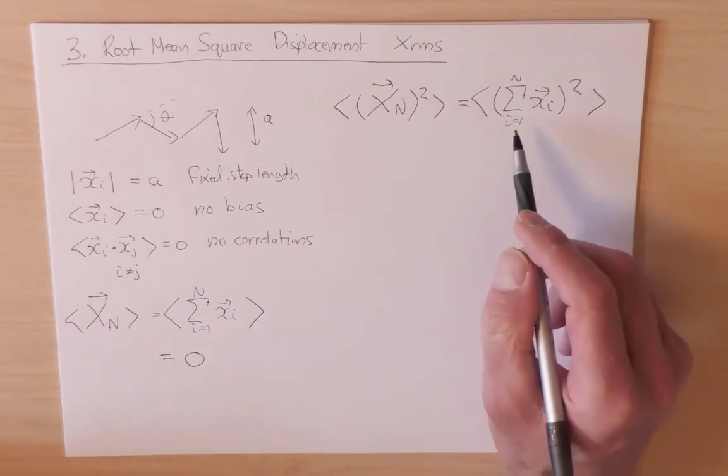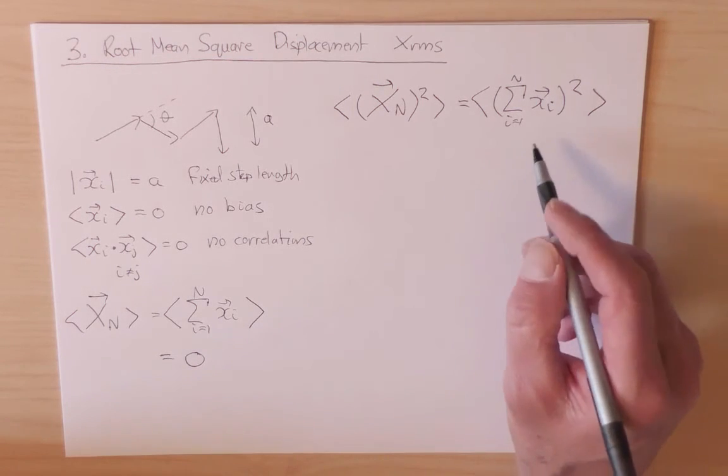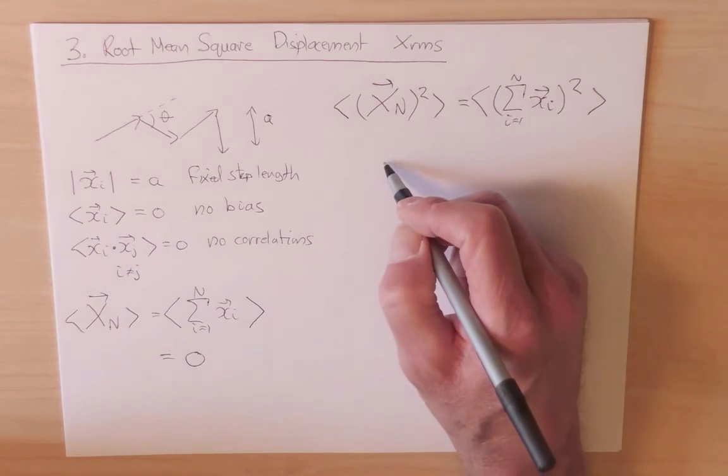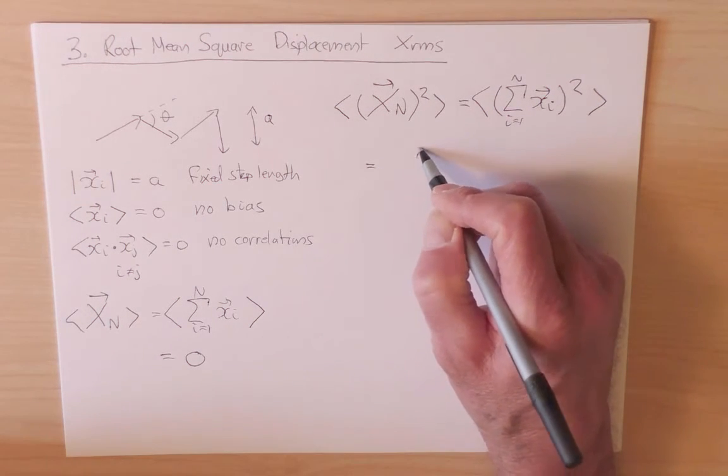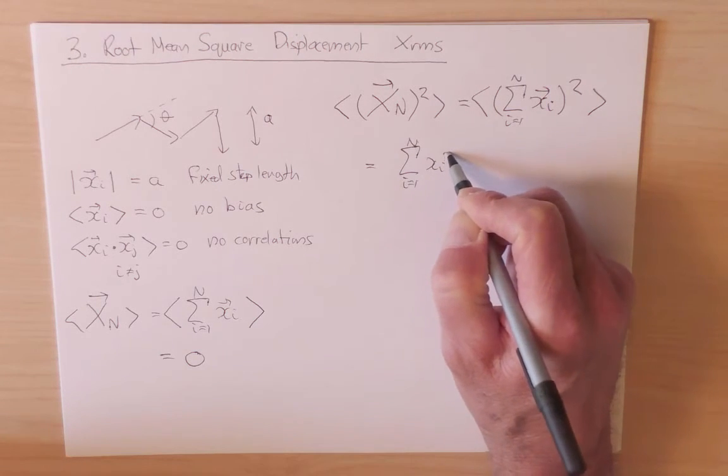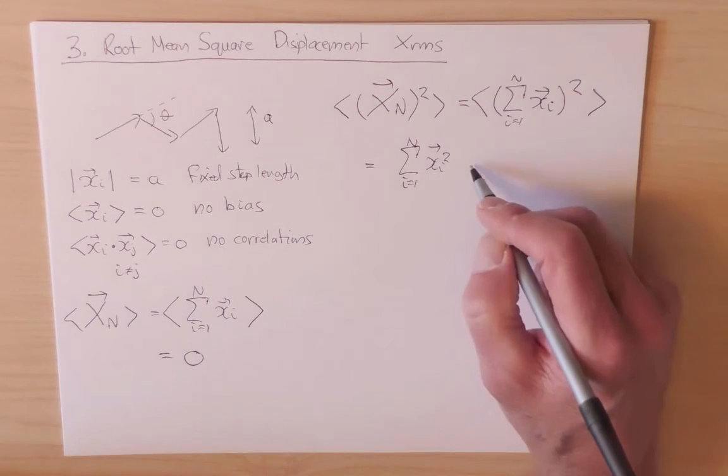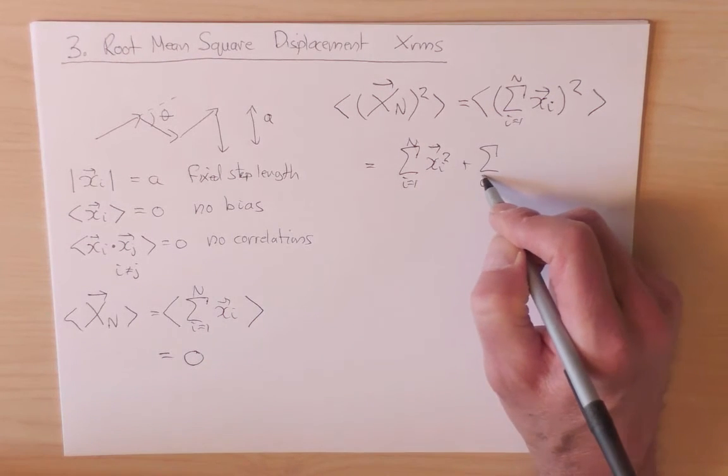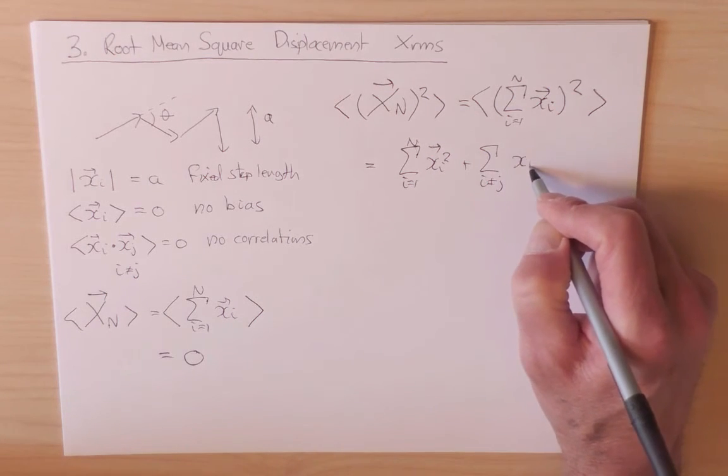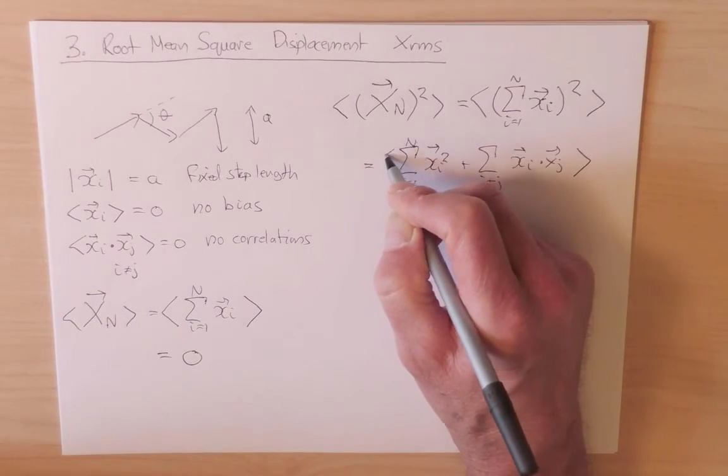So when we square this sum, this binomial, there are two types of terms. There are so-called diagonal terms, where we have X_i dotted into X_i. And so there'll be terms that look like this, summation i equals one to n of X_i squared. And then there are all the cross terms, where we sum over all possible combinations, i not equal to j, of X_i dot X_j. And then we have to take the average value of all of this.